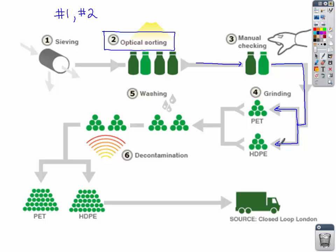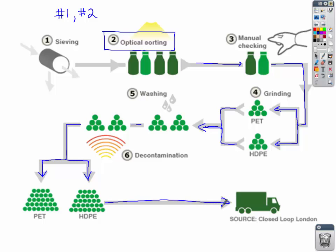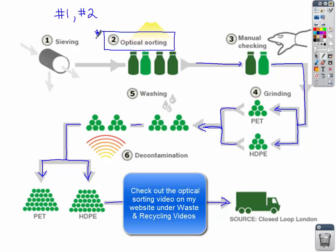Now you have your PET ground down to fine little flakes, and your high-density polyethylene ground down to fine little flakes. We send them off to be washed and decontaminated, and then we get them into separate piles where they are stored until they're ready to be put onto a truck and shipped off to be made into new products. Pretty easy process, all made possible by the separation and this new technology of optical sorting. We'll watch a quick video on that — it's a pretty interesting process.